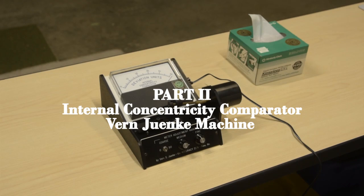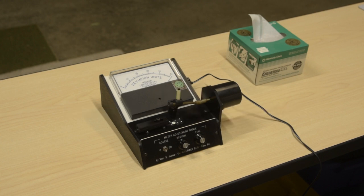Shooters, reloaders, and conversationalists, welcome to Pounder Labs. This is part two of our video on the internal concentricity comparator, commonly referred to as the Vern Juki machine.